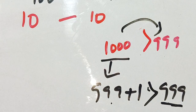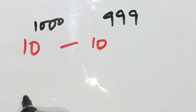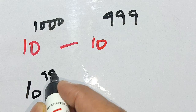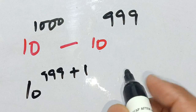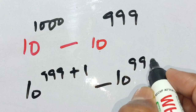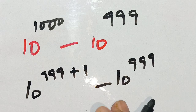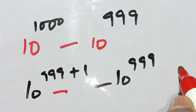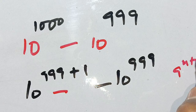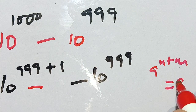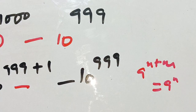Our problem becomes 10 raised to power (999 plus 1), minus 10 raised to power 999. This is in the form of a raised to power (n plus m), which equals a raised to power n times a raised to power m. We apply this identity here.